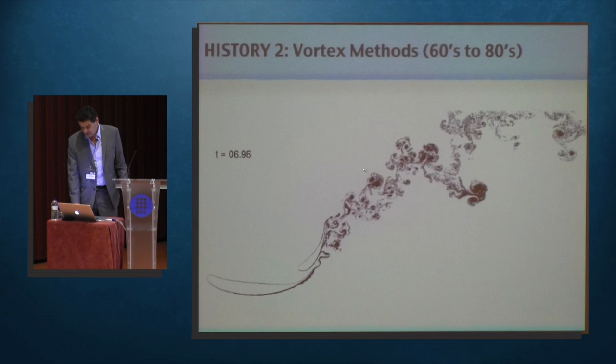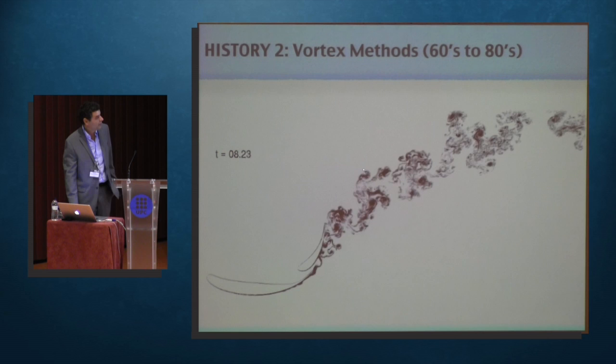Vortex methods is about taking the Navier-Stokes, solving them in velocity vorticity formulation. It's a fantastic method because you need no grid. You can do very complex geometries. You have automatic adaptivity, and you have the minimum set of computational elements that you can have. You don't have any grid. These are all your computational elements. Back in the 60s and 80s, people like Chorin, Leonard, Belot-Serkowski, they did wonderful works, but nevertheless, vortex methods died.